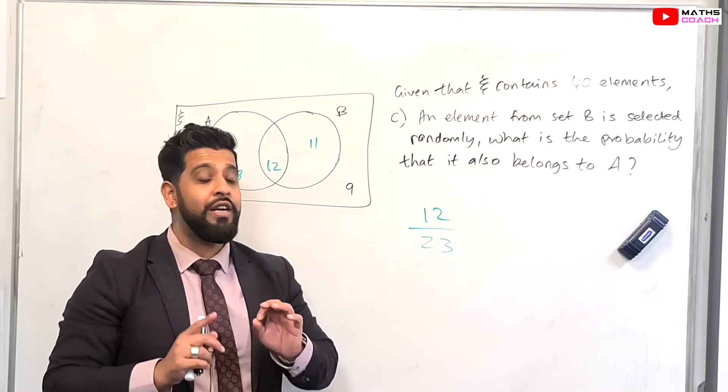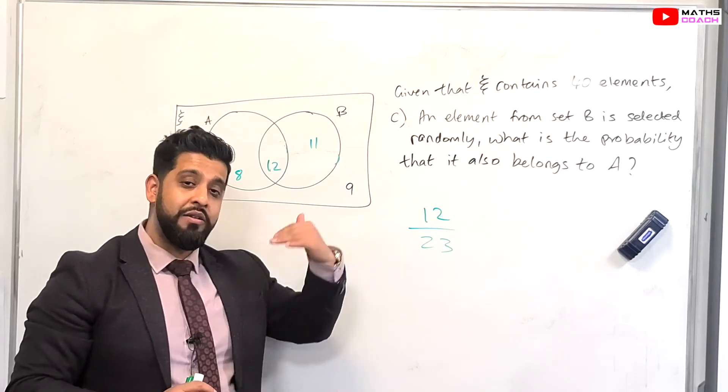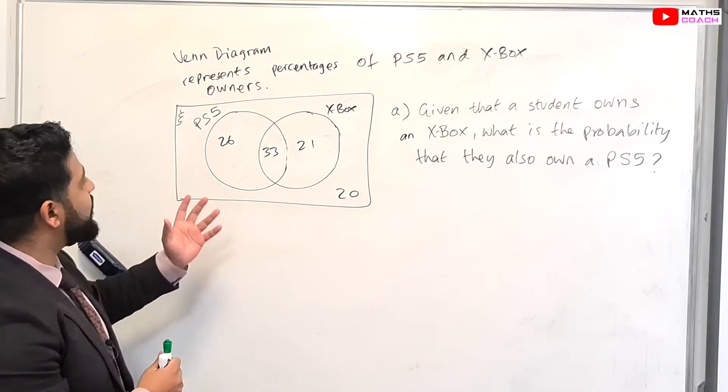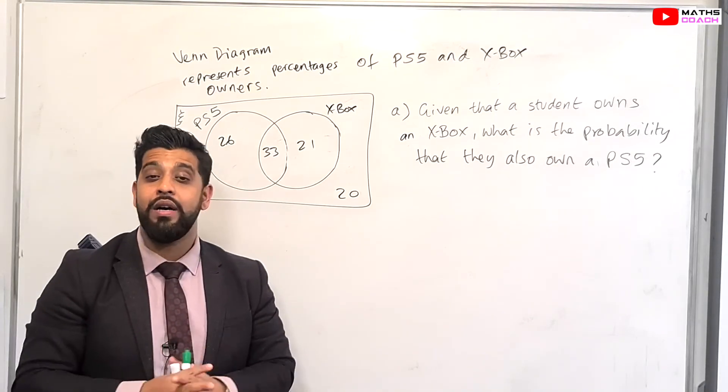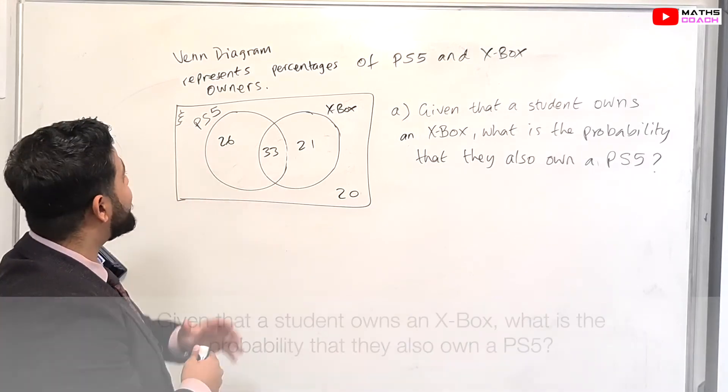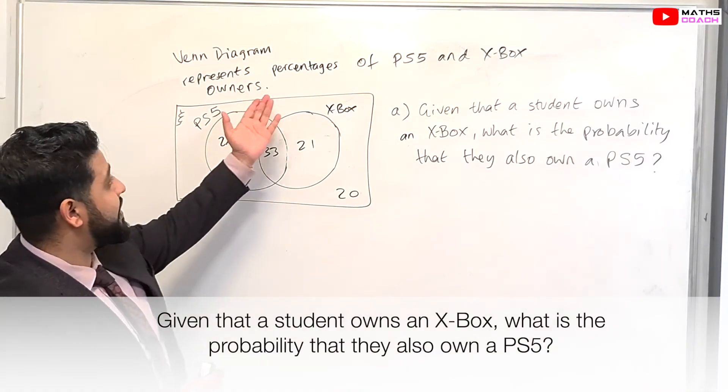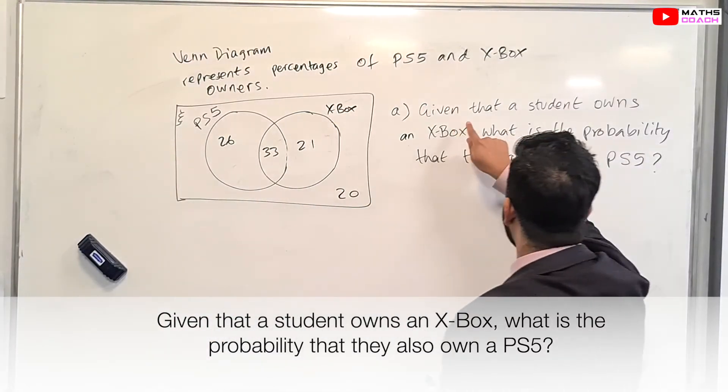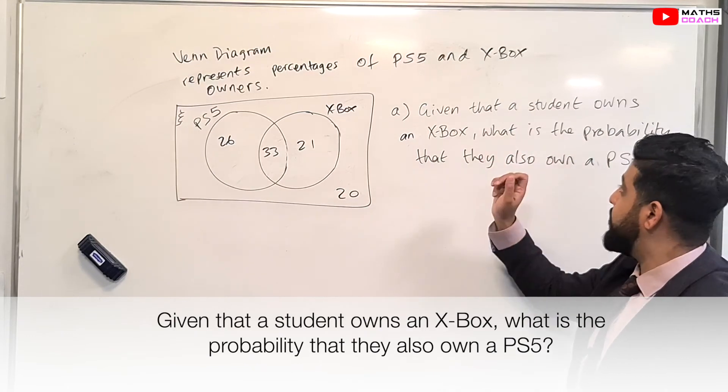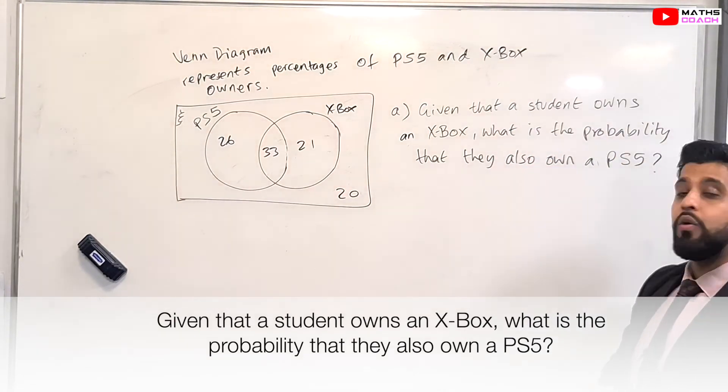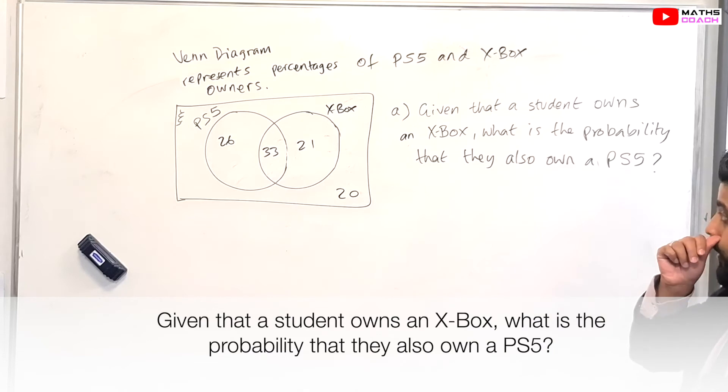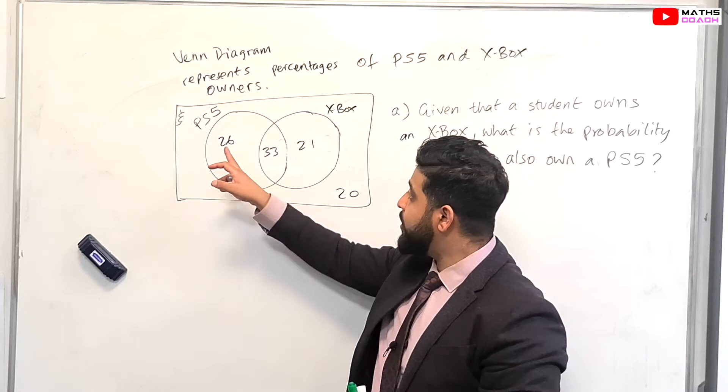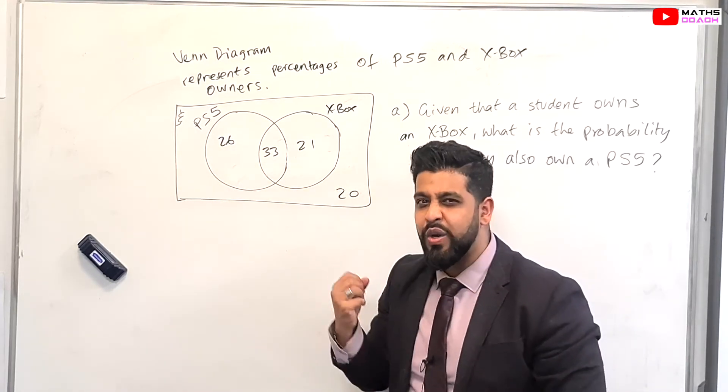In the next question, we'll explore a question like this, and you can try this one yourselves. Okay, so on to our last question, we will be now testing our understanding of the given probability. So here we have a Venn diagram that represents percentages of PS5 and Xbox owners. And we are told, given that a student owns an Xbox, what is the probability that they also own a PS5? So what are we looking at? If you look at a Venn diagram, we got 26, 33, 21, 20. So let's just quickly go through it.